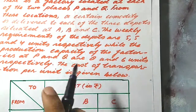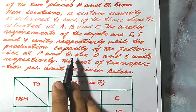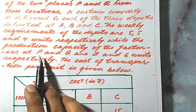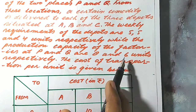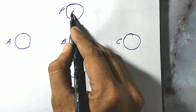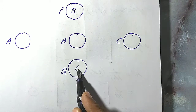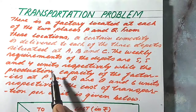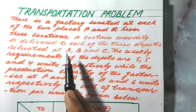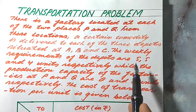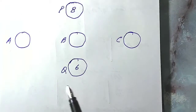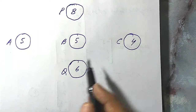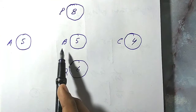According to our problem, the production capacity of the factories at P and Q are 8 units and 6 units respectively. So write down 8 in the circle P and 6 in the circle Q. The weekly requirement of the depots are 5, 5 and 4 units respectively — the weekly requirement of depot A is 5 units, depot B is 5 units, and depot C is 4 units. So we write the weekly requirements inside these circles: 5 for A, 5 for B and 4 for C.